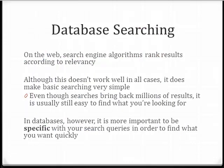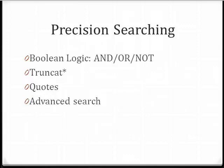Databases are more particular about what you enter into your search than Google is. It's important to be specific and take advantage of their various search tools to find what you need efficiently. A few basic tools, like Boolean operators, truncation, quotes, and advanced search options can help you to speed up the searching process.